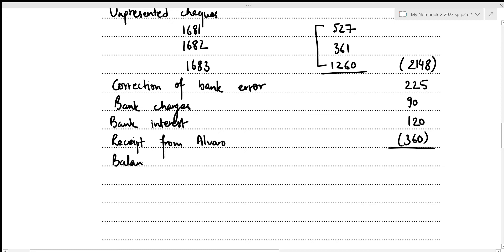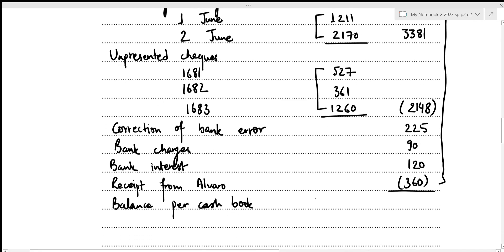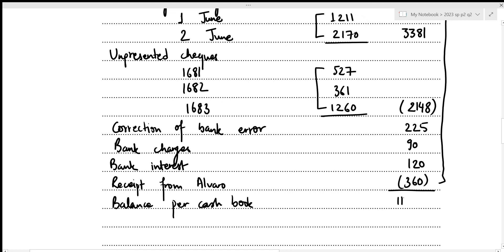We've covered all the additional information, so now we can figure out the balance as per the cash book. Adding all amounts: minus 12,350 plus 3,381 minus 2,148 plus 225 plus 90 plus 120 minus 360 = negative 11,042. Since it's a negative balance, we write it in brackets. This concludes the second part of the question.